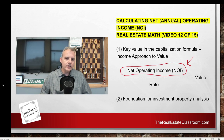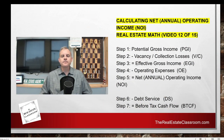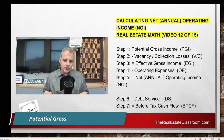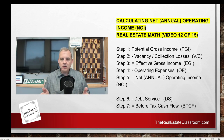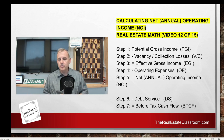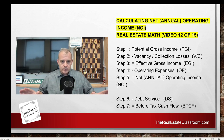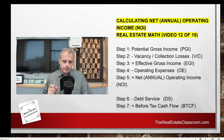Let's go over how we calculate the net operating income. There are basically five steps. Number one: we take the potential gross income of the property. Assuming that all 50 bays in a strip mall or all 50 apartments in an apartment community are rented for the entire 12 months, that gives us the potential gross income — the PGI.